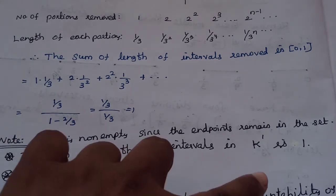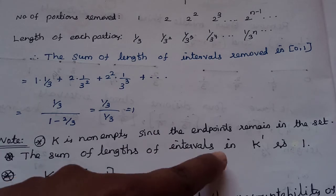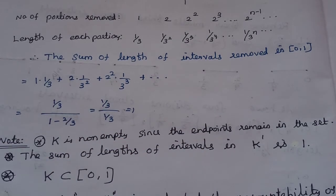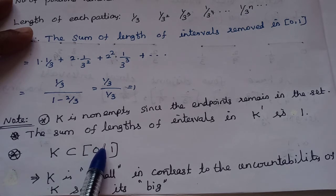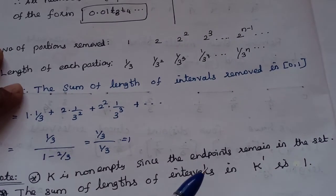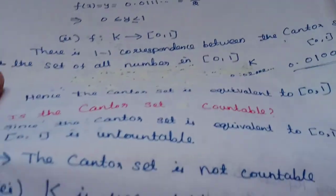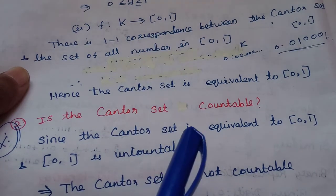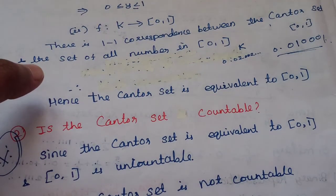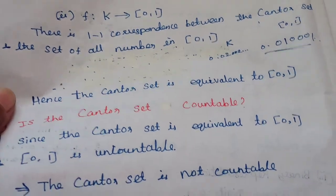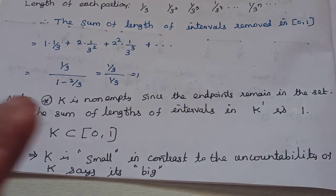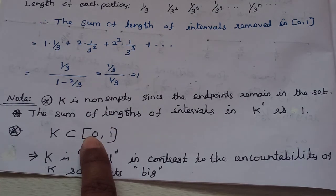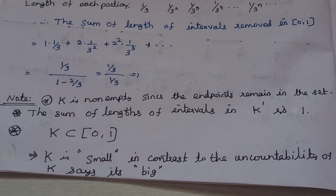If we remove the complement K', the sum of the lengths of the open intervals in K' equals 1. So K is a subset of the closed interval [0,1]. But we can prove — in a third video — that K is equivalent (in cardinality) to the closed interval [0,1]. Therefore K is uncountable.